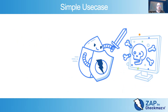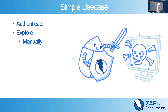Zap is actually quite a complex product, but we can explain a simple use case quite easily. First of all, you'll need to authenticate to your target application. You can do this manually by logging in via a browser proxied through Zap, or you can configure Zap to handle the authentication. Then you need to explore the application or get Zap to explore it. You can explore manually via a browser proxied through Zap, or Zap has three spiders, all of which can crawl the application in different ways with different strengths and weaknesses. You can also import a wide range of API definitions, so Zap can really understand exactly what APIs your application provides.